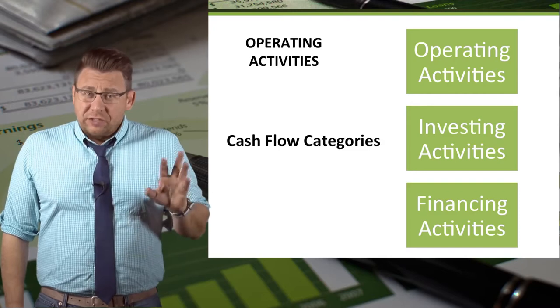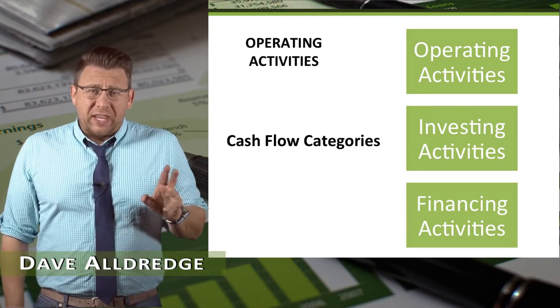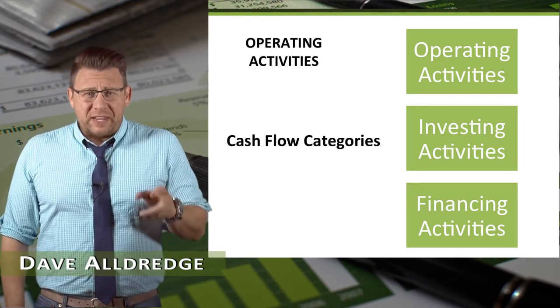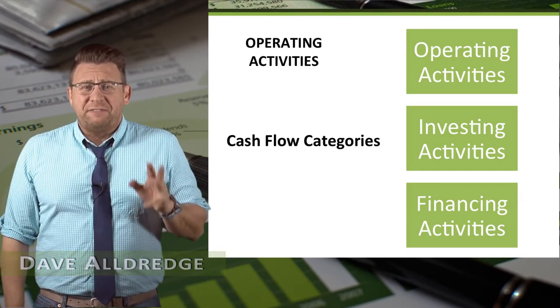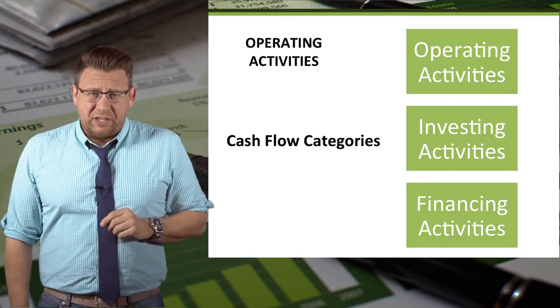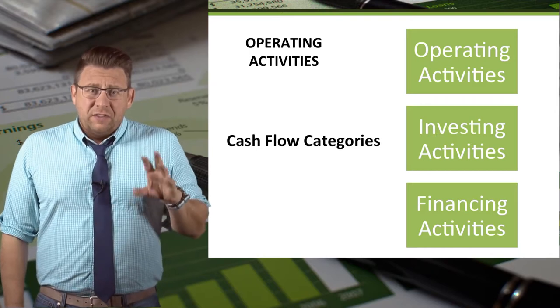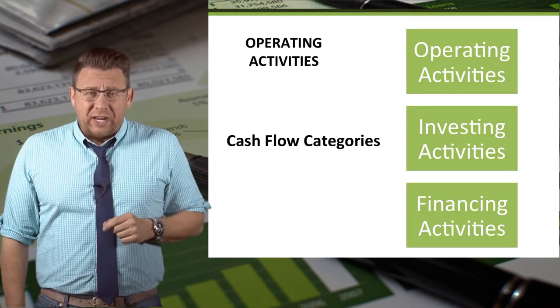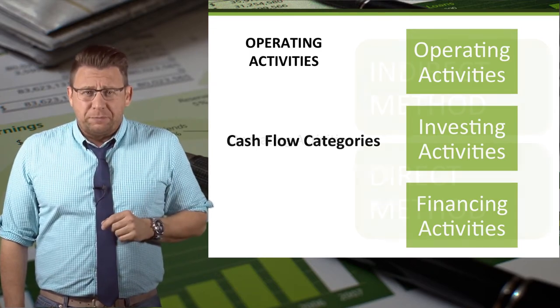The statement of cash flows is divided into three categories: operating activities, investing activities, and financing activities. This video will focus on the operating activities section.